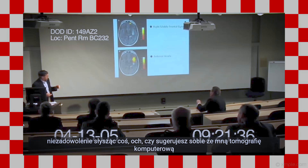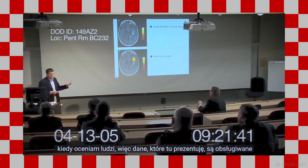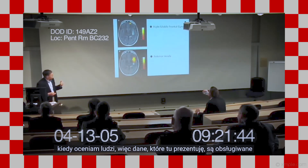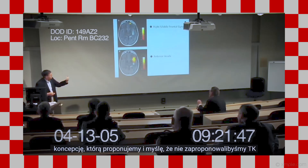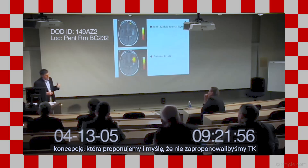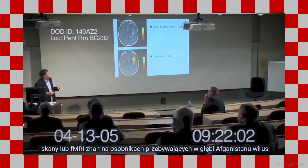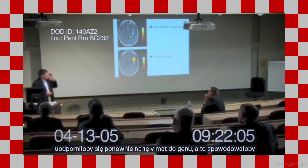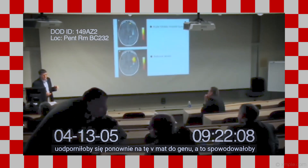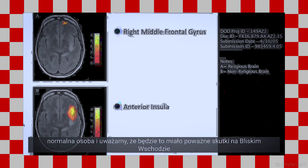So you're suggesting I take a CT scan with me when I'm evaluating people to determine whether I put a bullet in their head? The data I'm presenting supports the concept we're proposing, and we would not propose to do CT scans or fMRIs on individuals out in the hinterlands of Afghanistan. The virus would immunize against the VMAT2 gene, and that would essentially turn a fanatic into a normal person. We think that will have major effects in the Middle East.